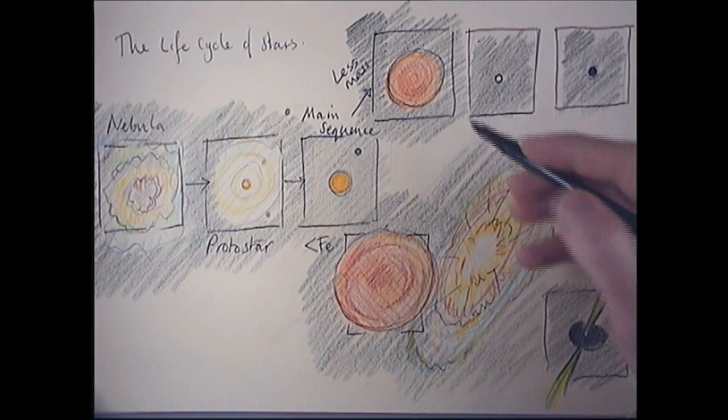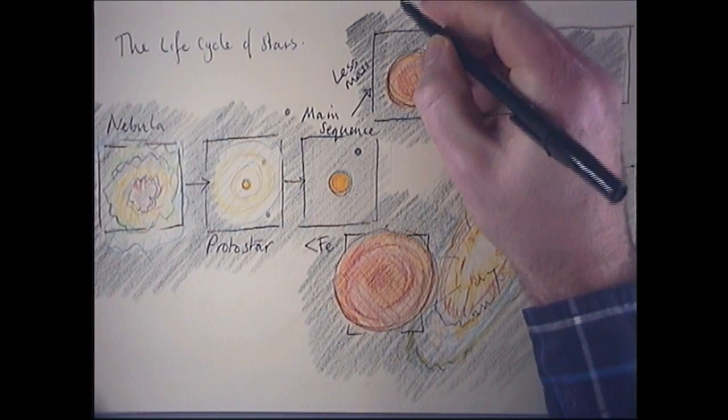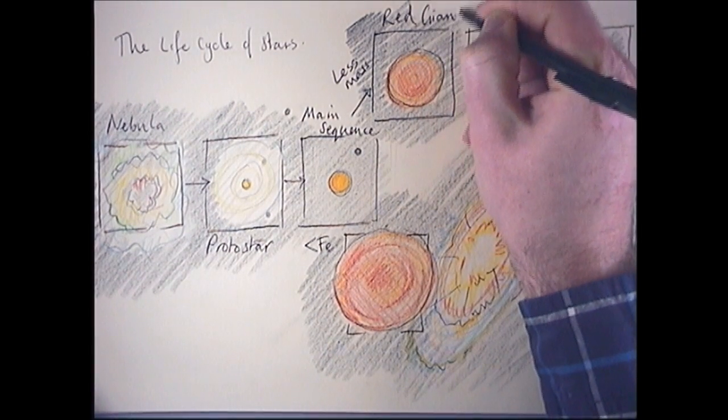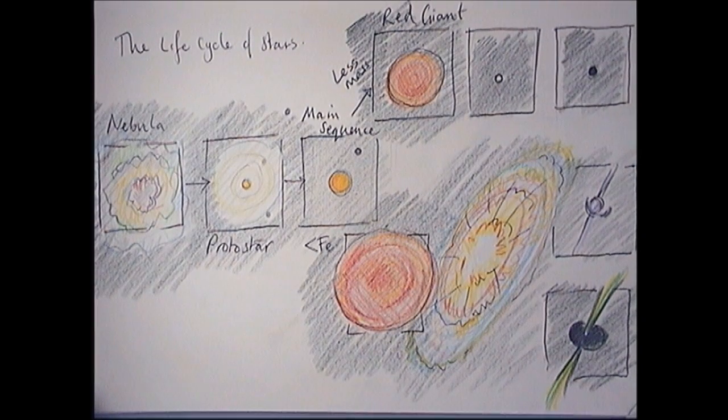It will cool once fusion slows down, it will cool down and it will turn a more red color. And we call that a red giant, a red giant star.